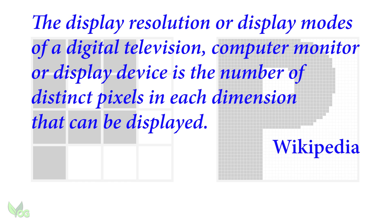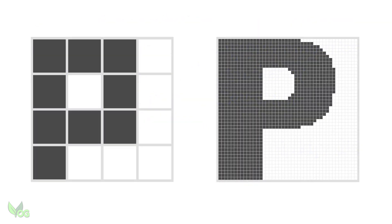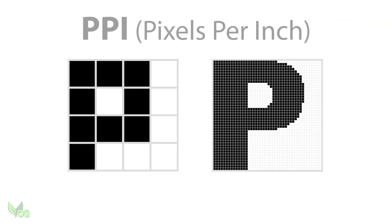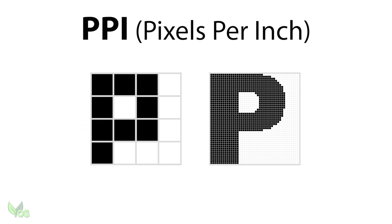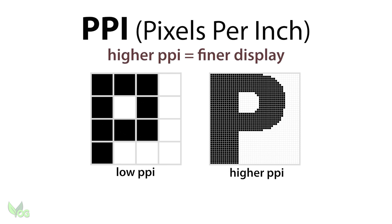Higher resolution can be thought of as more pixels being squeezed into the same size screen. The density of pixels is often measured in PPI, or pixels per square inch, and higher numbers mean greater density and finer, sharper images.